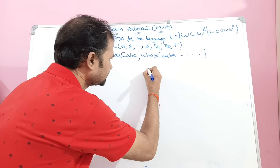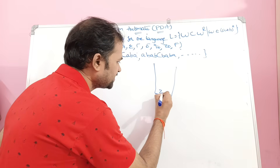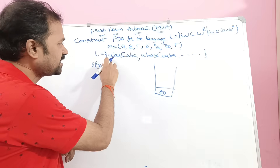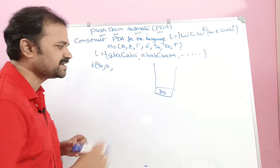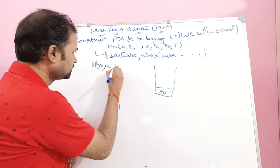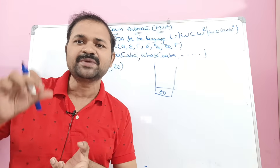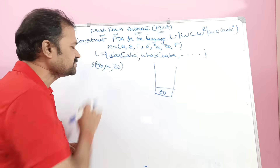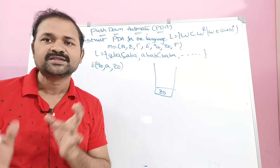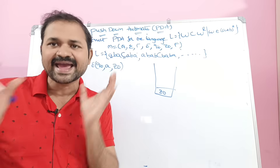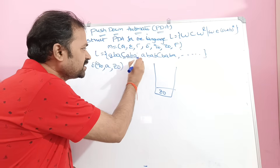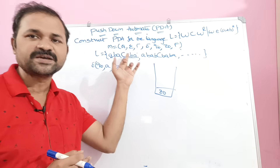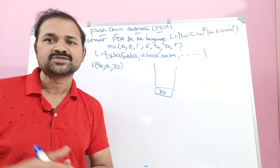Let us find out the transition functions. Initially the stack is empty, and the starting symbol of the stack is Z0. The logic is very simple: we have to push all the symbols onto the stack until we get C. While reading C, if the symbol is C then don't perform any operation — keep the stack as it is. After C, for the remaining symbols, if the symbol is A and the top of the stack is A, then perform the pop operation — we have to do the matching.